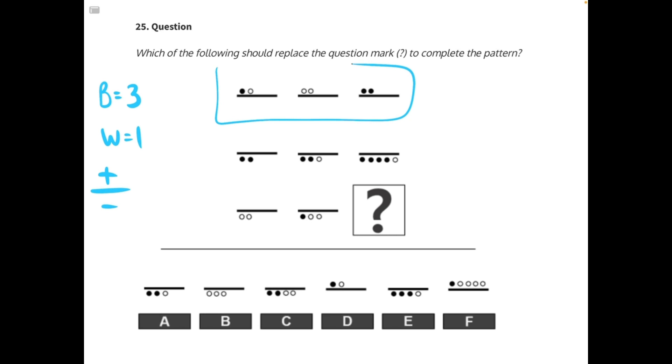So let's take a look at our first row of elements. We have a black circle and a white circle, meaning 3 plus 1. We have two white circles, which would be 1 plus 1. And then we have two black circles, which is 3 plus 3. If we were to simplify all of these, we would have 4 as our element 1, 2 as our element 2, and 6 as our element 3.